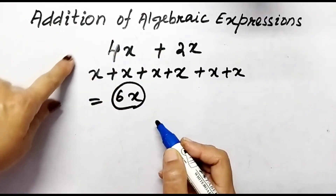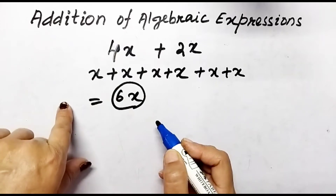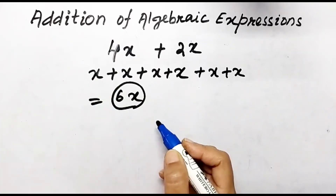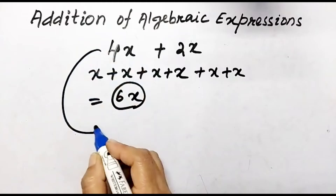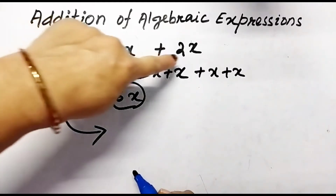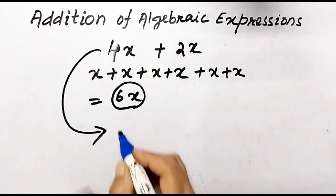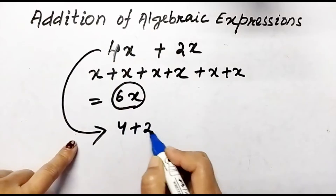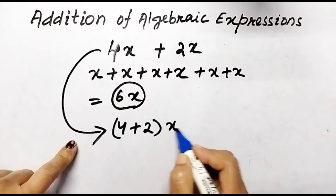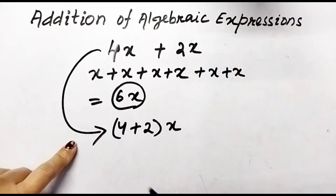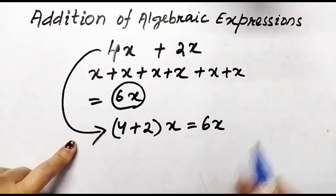But it is not always possible to simplify all terms this way. So for addition, we have to add both the coefficients. Here 4 plus 2, and keep the variable, so the sum is 6x.